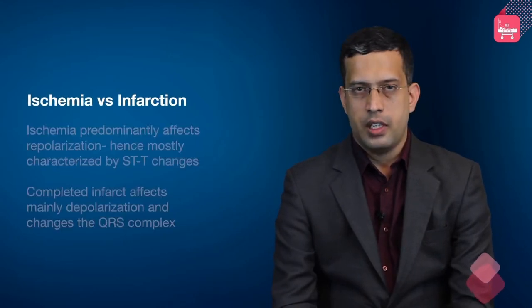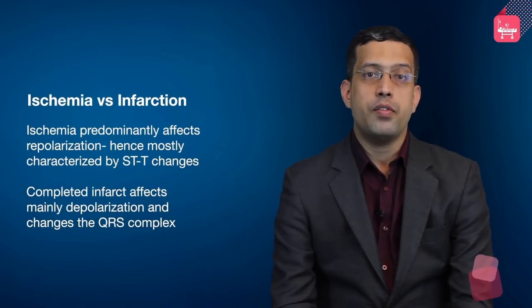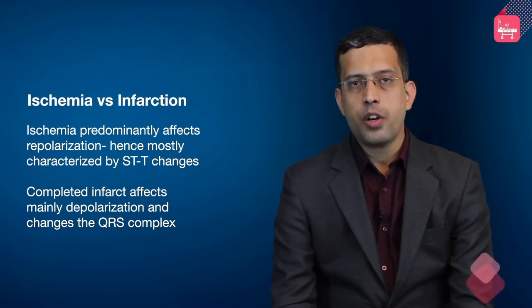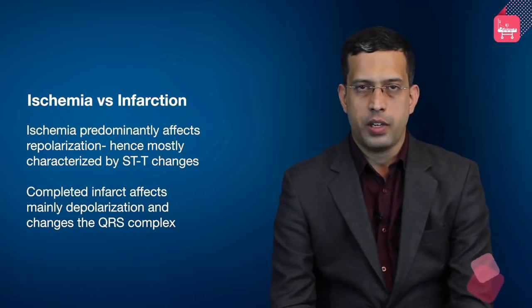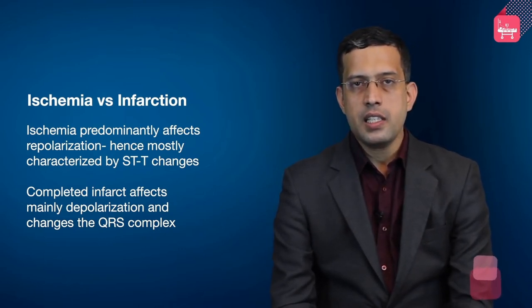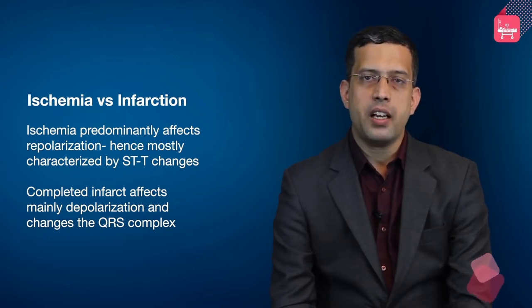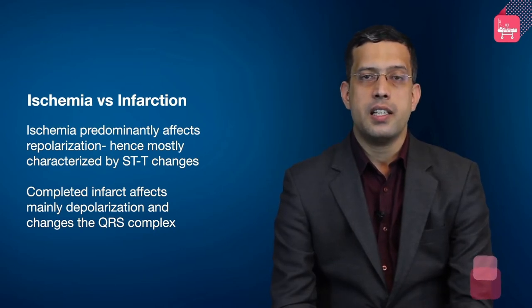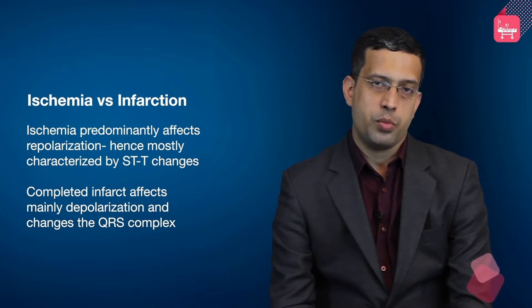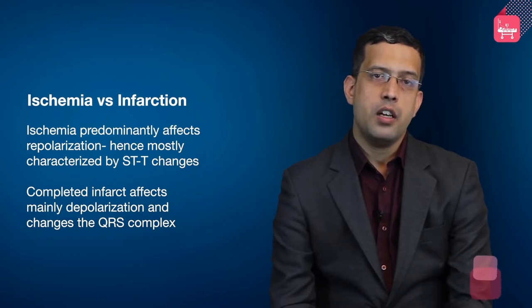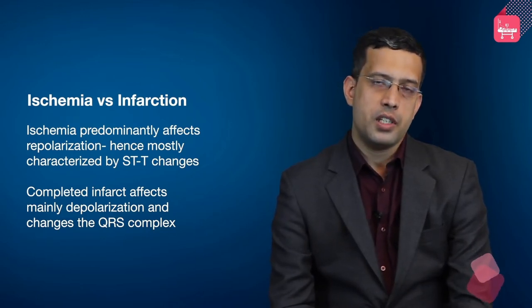The other basic concept is ischemia versus infarction. Ischemia is where blood flow is reduced and the myocardium is threatened. Infarction is the end product — because of prolonged lack of blood supply, the muscle has completely died or infarcted. Ischemia mainly affects repolarization and is characterized by changes in the ST segment and T wave, whereas completed infarct mainly affects myocardial depolarization and therefore changes the QRS complex.